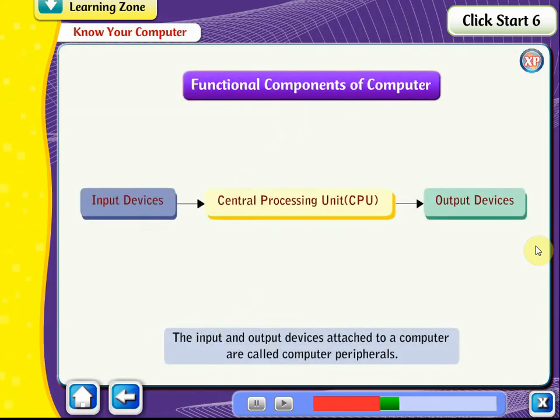Functional Components of a Computer: The various functional components of a computer are: (1) Input devices, (2) Central processing unit, and (3) Output devices. The input and output devices attached to a computer are called computer peripherals.